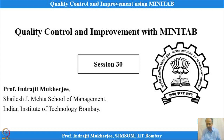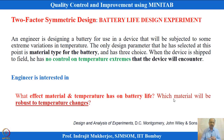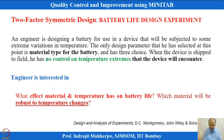Now we will do the same for another experimentation to see what we can do when there is a continuous variable. In this battery life experimentation example, taken from Douglas Montgomery's book on Design and Analysis of Experiments, the engineer wants to maximize battery life. Two factors are considered: material type, which is a categorical variable, and temperature, which is a continuous variable.